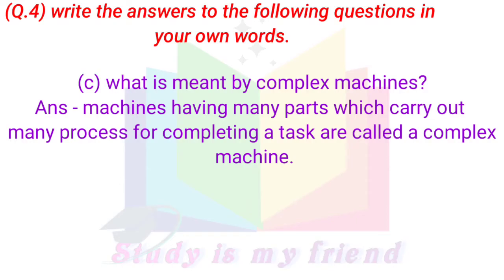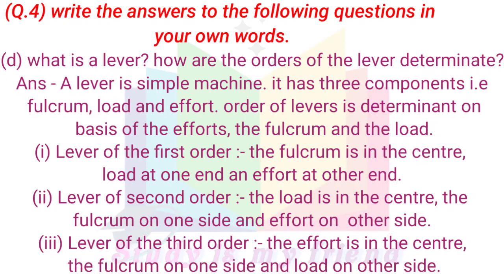C. What is meant by complex machine? Answer: Machines having many parts which carry out many processes of completing a task are called complex machines. D. What is a lever? How are orders of the lever determined? Answer: A lever is a simple machine. It has three components: fulcrum, load, and effort. The order of levers is determined on the basis of the positions of the effort, the fulcrum, and the load.